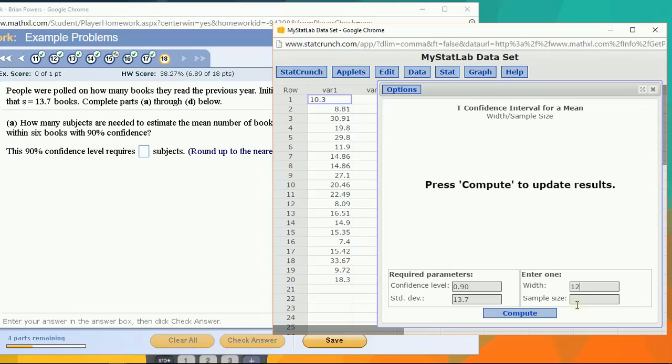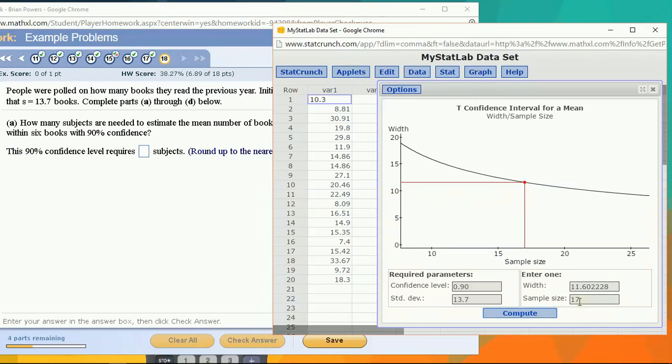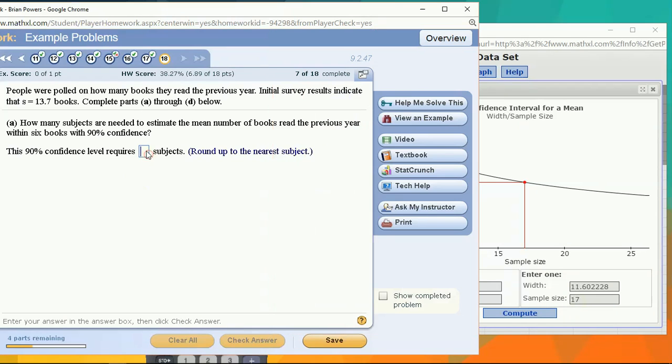So plus or minus six means you have to go up six, down six, altogether it's 12. Hit compute, and you have your sample size. You only need a sample size of 17 to get the job done.